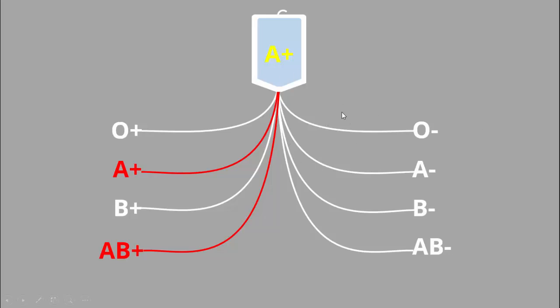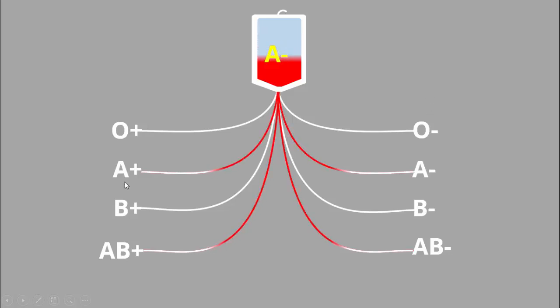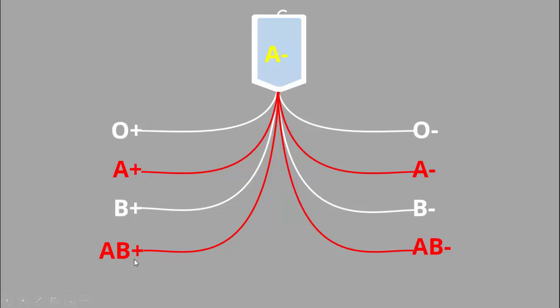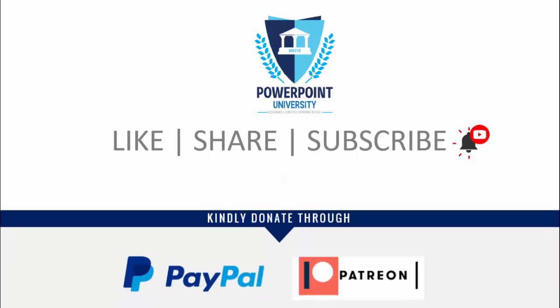Likewise, I have created one more slide for A negative. A negative is compatible with A positive, A negative, AB positive, and AB negative. Similar slides can be created for O positive, O negative, and the remaining blood types. I've used Office 2019 for this tutorial. If you haven't subscribed to my channel PowerPoint University, please subscribe and enable the bell notification. You can join my Telegram group via the link provided, and contribute through PayPal or Patreon.